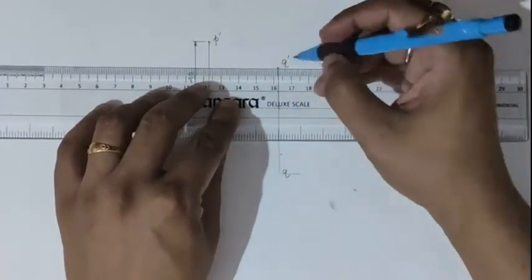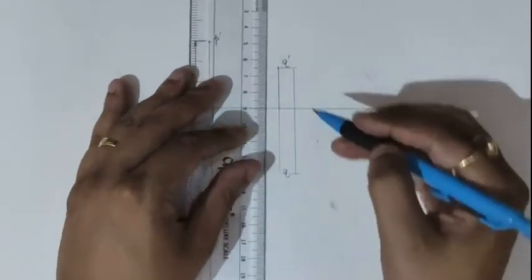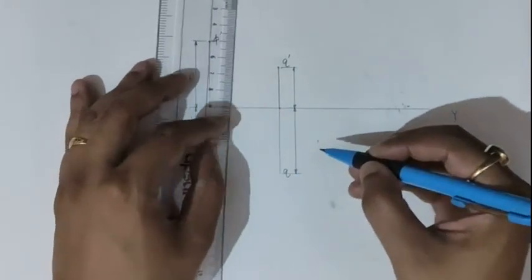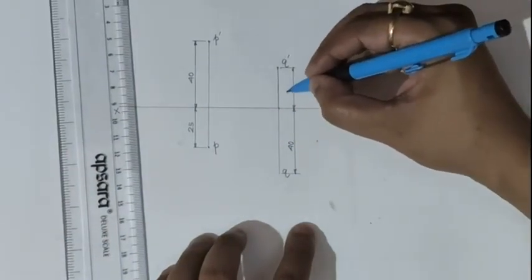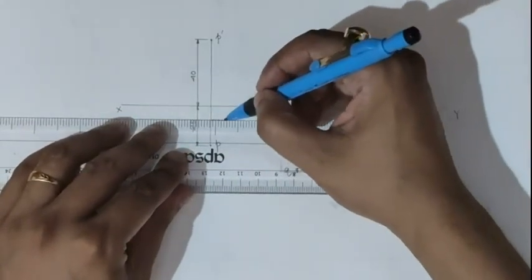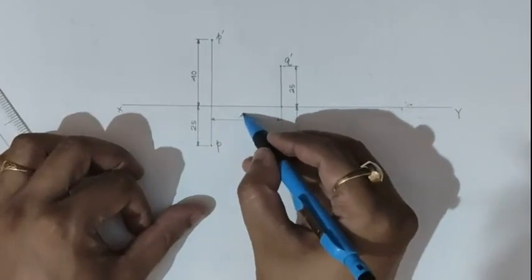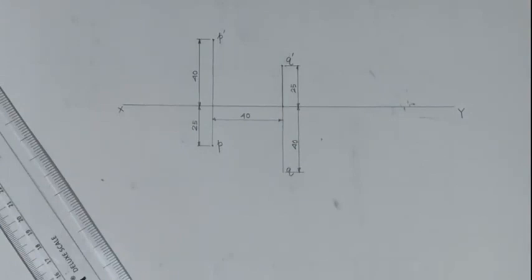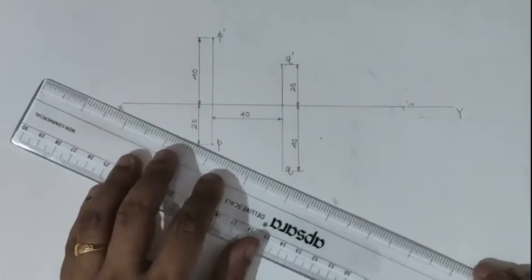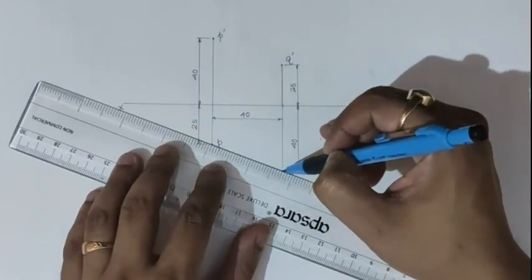Now let us give the dimensioning of the top view and front view. The front view distance is 40 mm and the top view is 25 mm. The distance between the two projectors is equal to 40 mm. Now we have to find the actual distance between points P and Q. For this, first join the top views — join P and Q. P and Q have been joined.